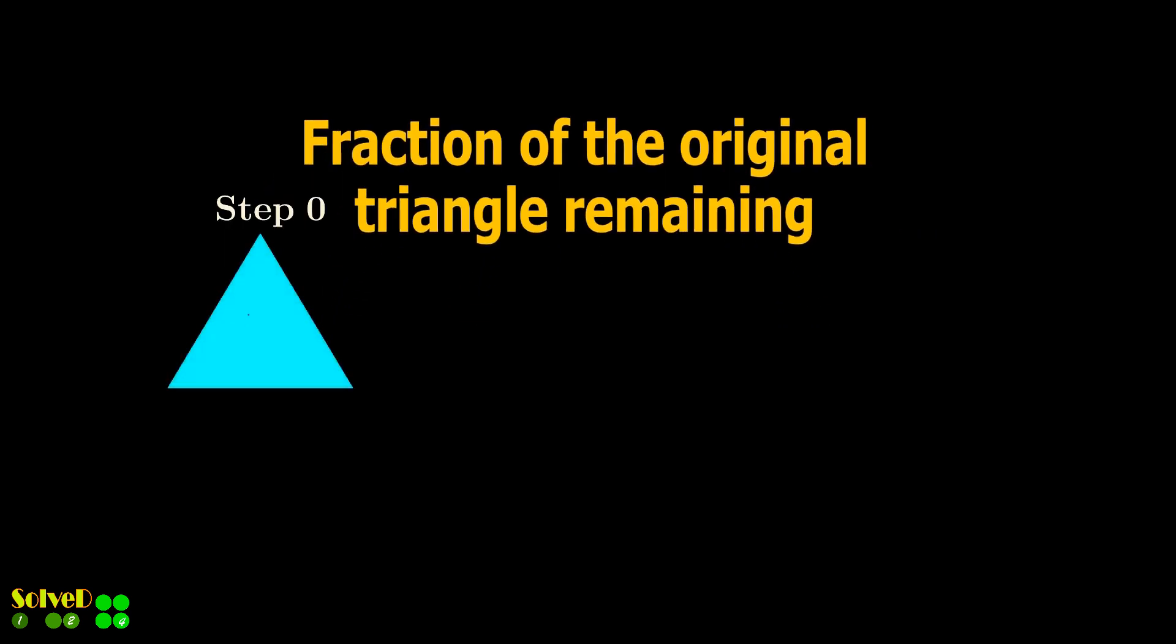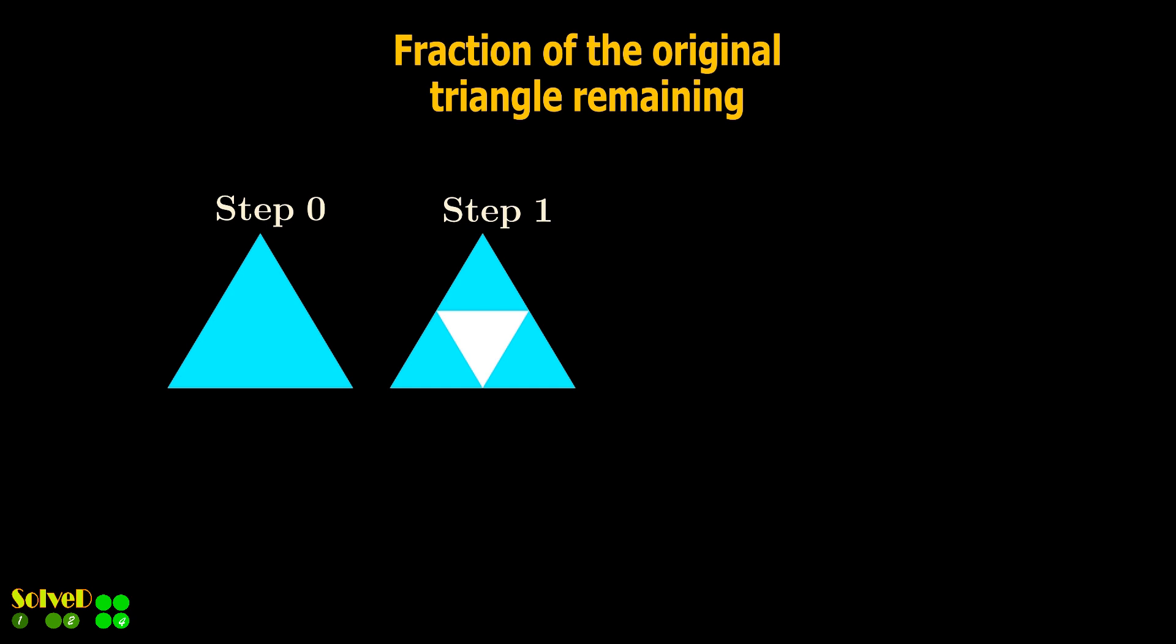For the fraction of blue triangles, again focus on the first two steps and find the common ratio. From step 0 to step 1 we got four identical triangles. So each one is one quarter of the original triangle. But three of these are blue.